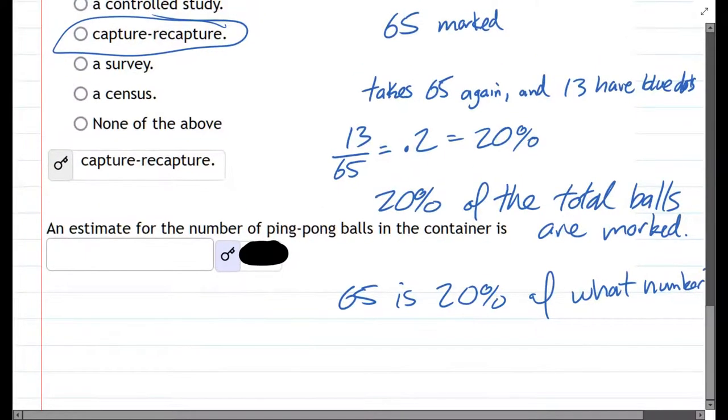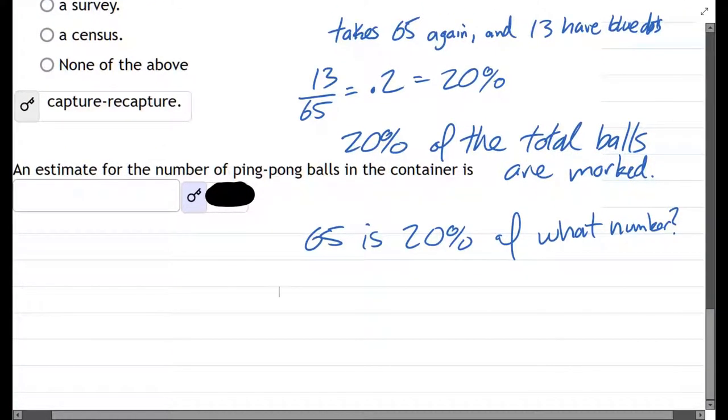We could do a little bit of algebra here. So 20% of what number? That would be 0.2 of the number x equals 65.